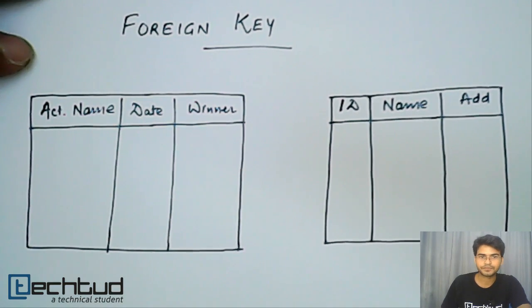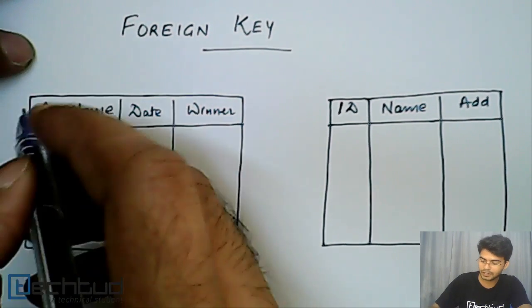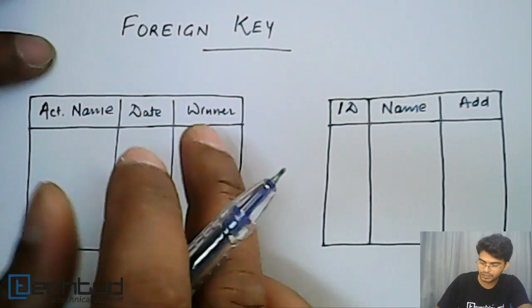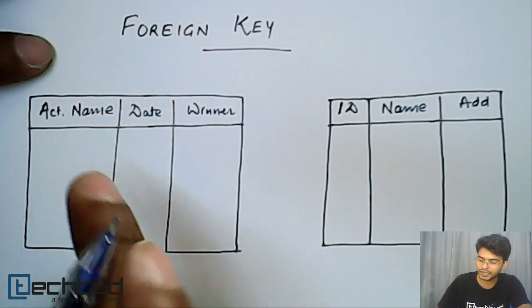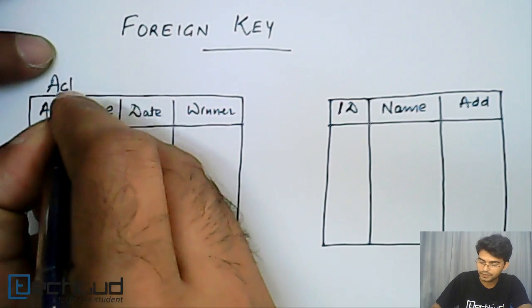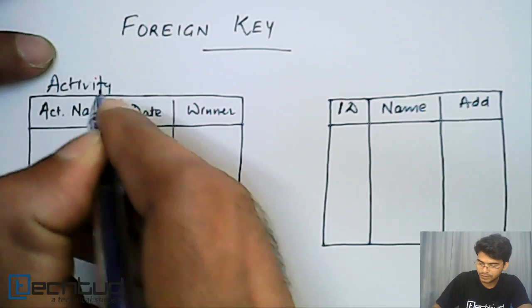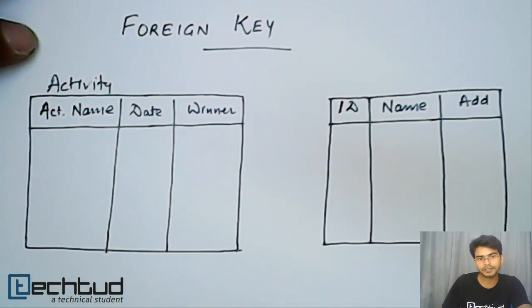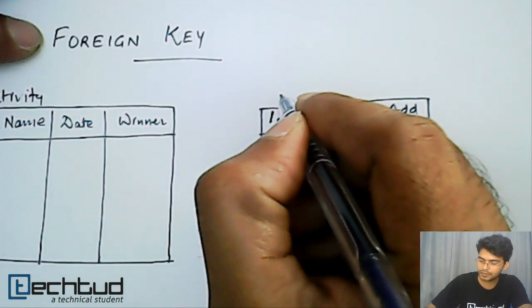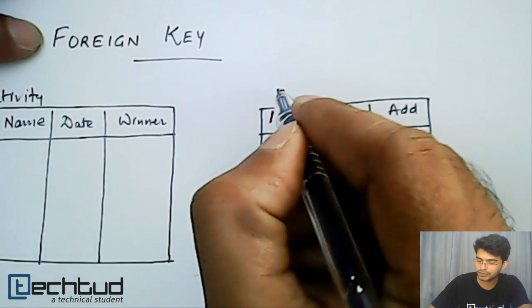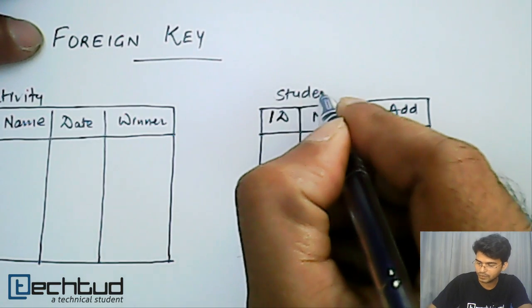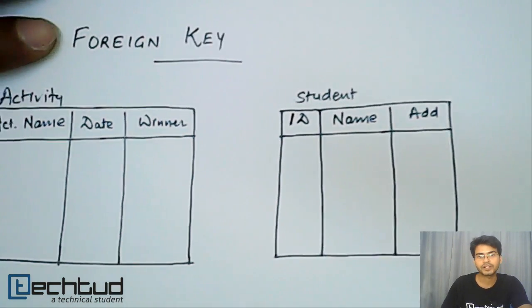For example, let's say we are going to have an activity in our college. So this is a database in which we are maintaining activity. This is, let's call it activity table, and this is the database of student in the college, entire student.